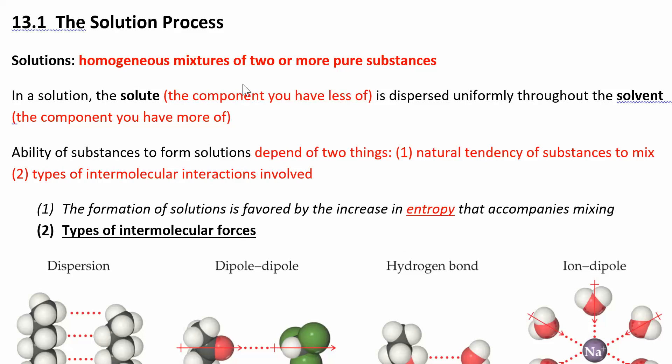So what is a solution? A solution is just a homogeneous mixture of two or more pure substances. There are two parts: a solute and a solvent. The solute is the one you have less of, and the solvent is the one you have more of. So if you dissolved salt in water, the salt would be the solute and the water would be the solvent. Water is your universal solvent, and when water is your solvent, you call that an aqueous solution.